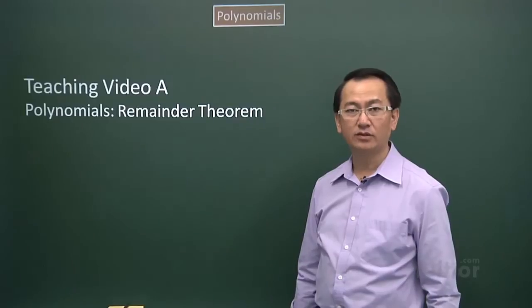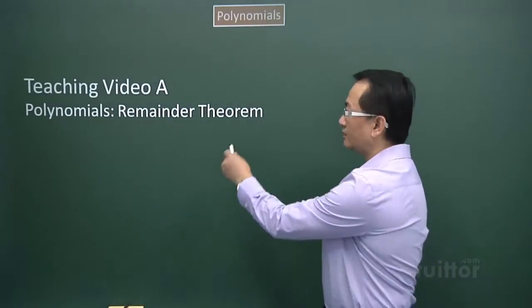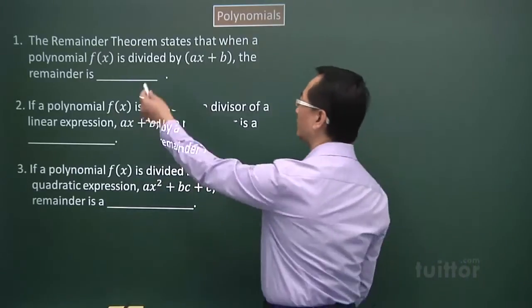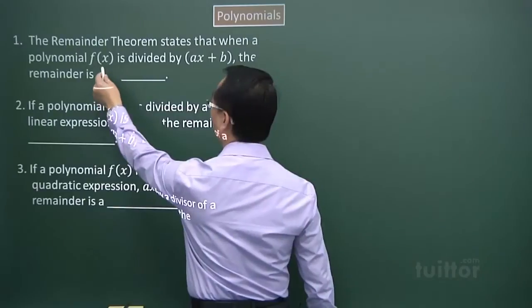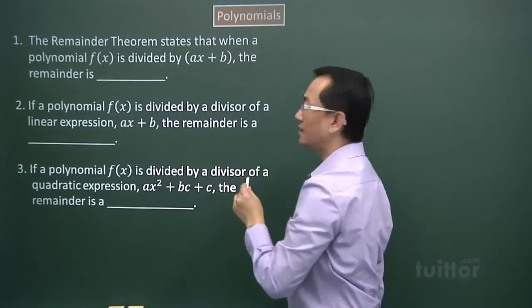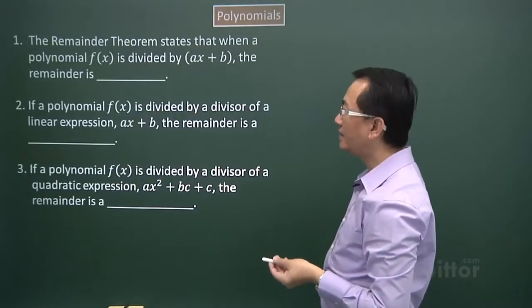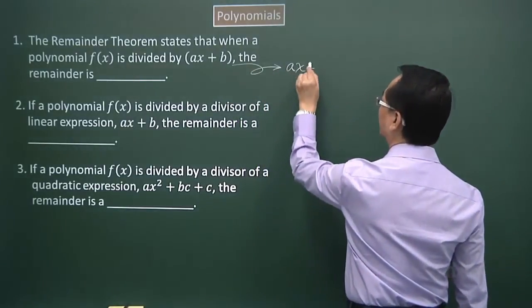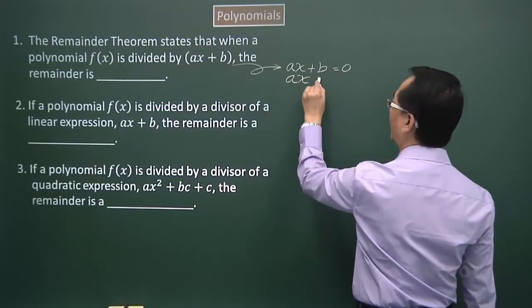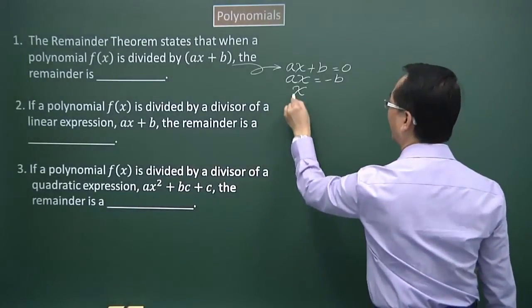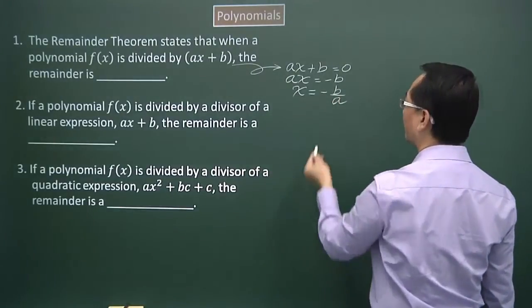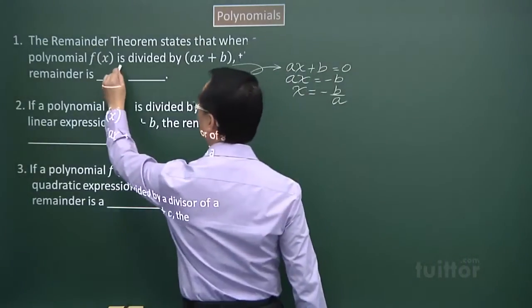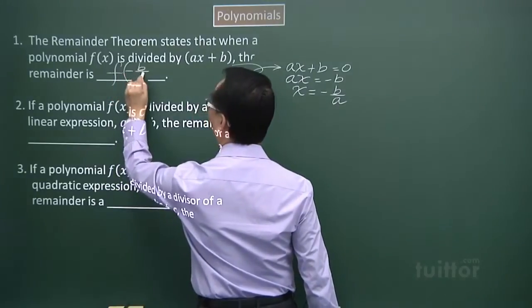We're now looking at the teaching video on polynomials; the subtopic is the Remainder Theorem. Point one: the remainder theorem states that where a polynomial f(x) is divided by a linear factor ax plus b, if that is equated to zero, then ax equals negative b and x equals negative b over a. So the remainder is f(−b/a).